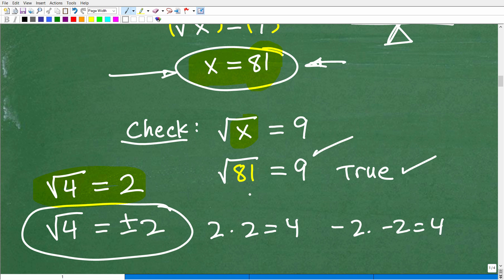All right. So the square root of 81, of course, is a positive 9. And 9 is equal to 9. That's a true statement. Therefore, this value there is the solution.